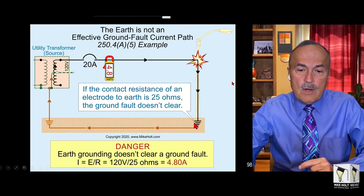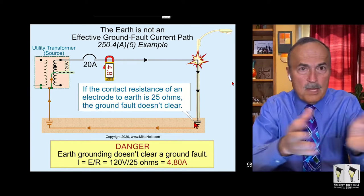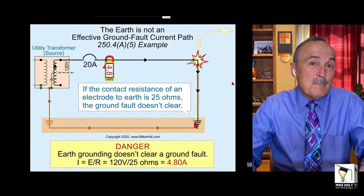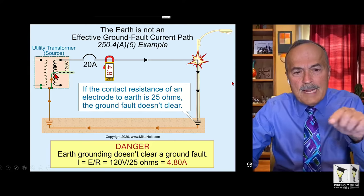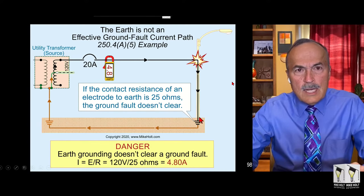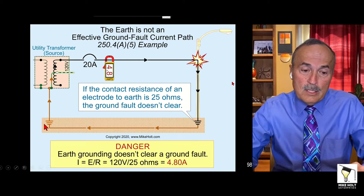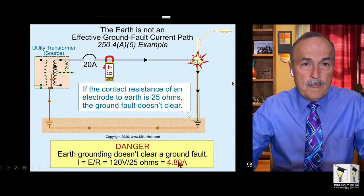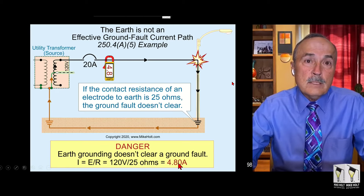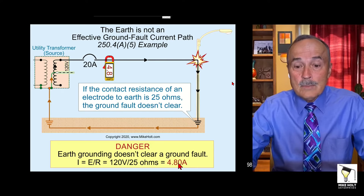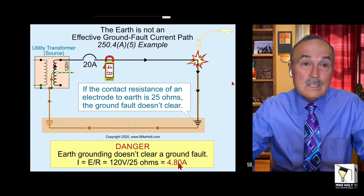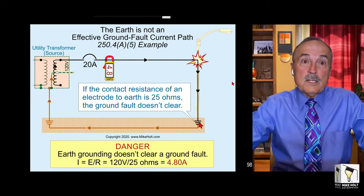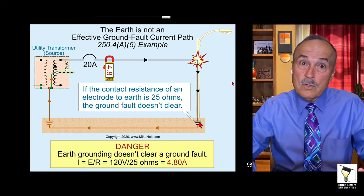If you drive a ground rod and that ground rod is 25 ohms contact resistance to the earth - we're measuring the contact resistance of that ground rod to the earth - how many amps would travel from the source, to the metal pole, energize the metal pole, go to the ground rod, and travel through the dirt to find a path back to the source? If that resistance is 25 ohms, Ohm's law gives you 4.8 amps. Guess what? It's not tripping a breaker. It's not supposed to. What's not okay is thinking you can use the earth as an effective ground fault current path. If you're driving ground rods because you're worried, you probably don't know about the effective ground fault current path.